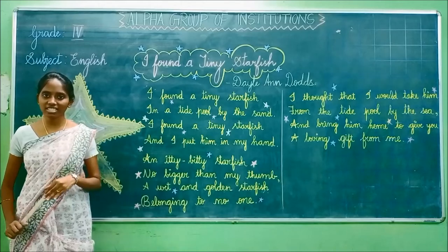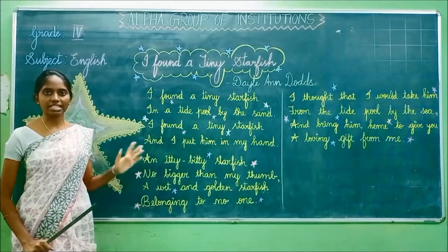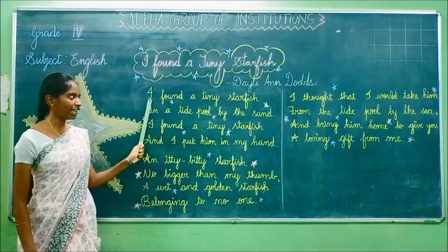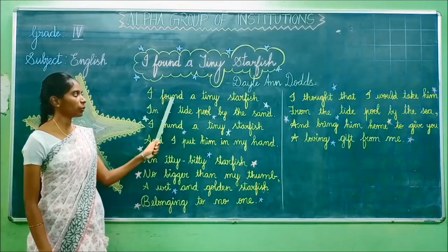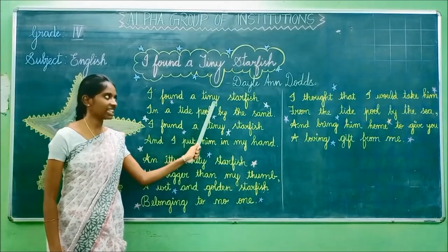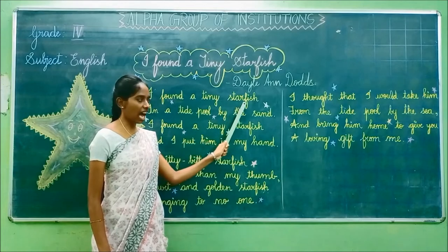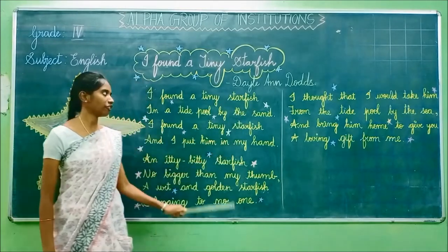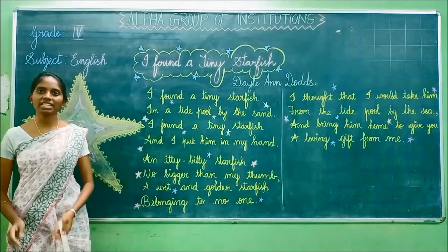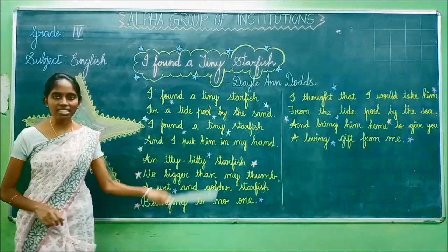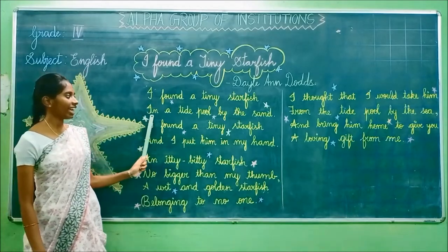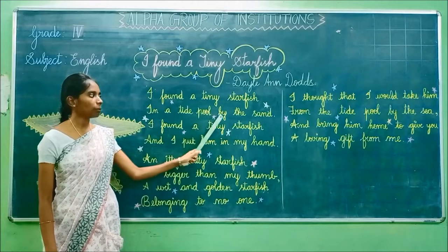In this class we are going to see the first stanza in detail. I found a tiny starfish. The poet finds a very small starfish. From the first line, we came to know the poet finds a very small starfish.